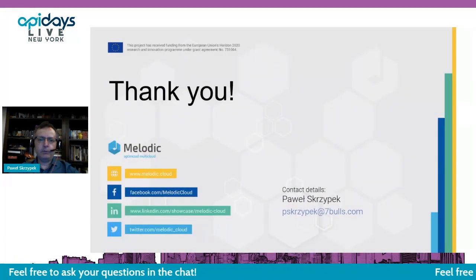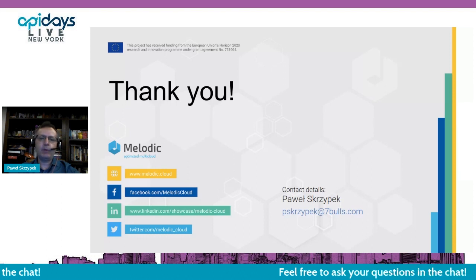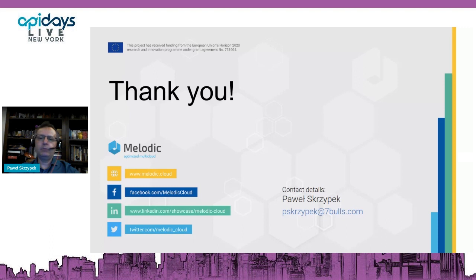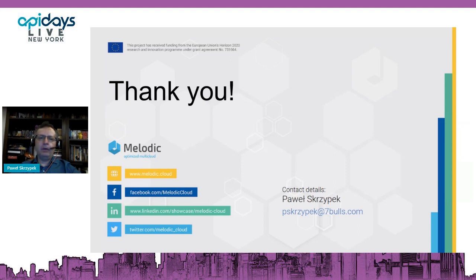That's all from my side. If you find this presentation valuable, you can check the Melodic website at www.melodic.cloud, and you can also follow Melodic on Facebook, LinkedIn, and Twitter. If you have any questions, please contact me directly. Melodic is continuously developed — we are currently working on the next version, which will use advanced concepts of proactive adaptation and polymorphic adaptations, so the results will be even better. The first release of the next version will be published soon, probably at the end of September.